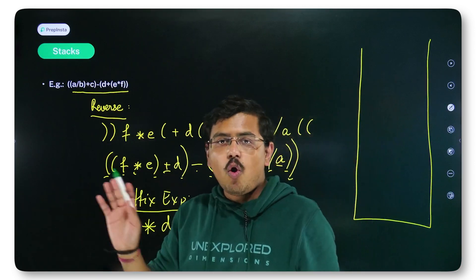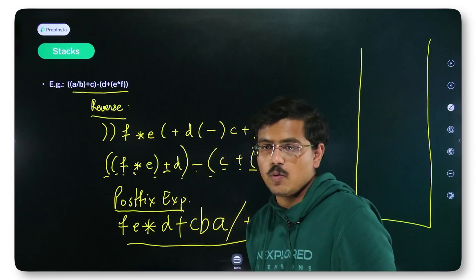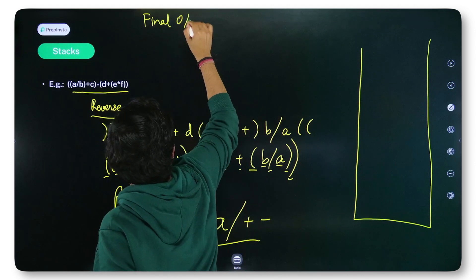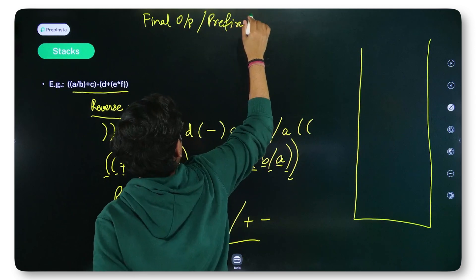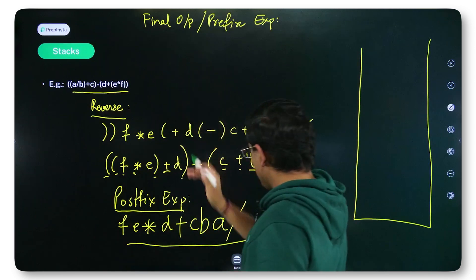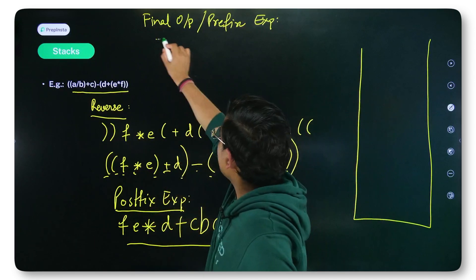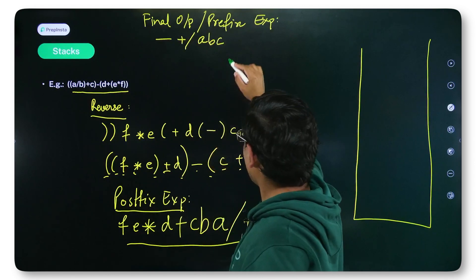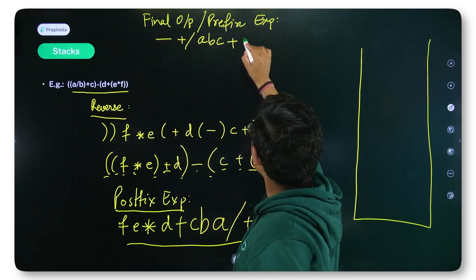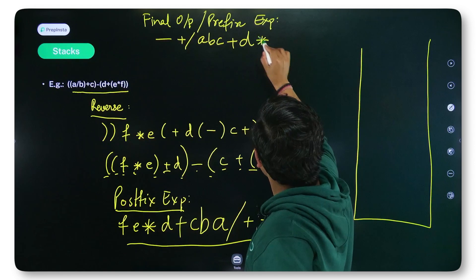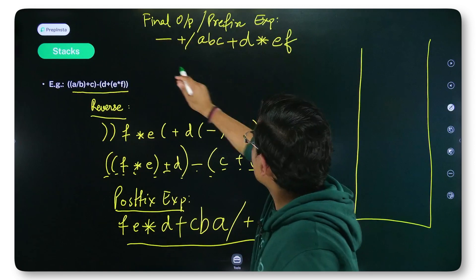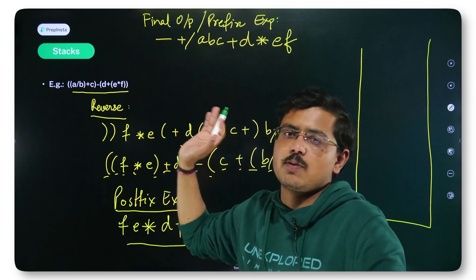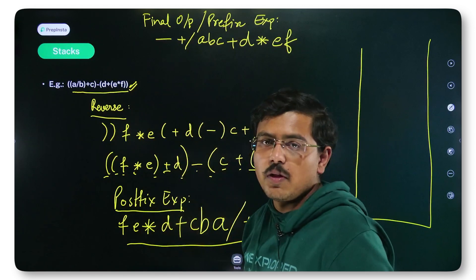Once the whole expression has been traversed, if there is anything lying in the stack, pop it out. Empty the stack and print everything popped. So here I print minus — it gets popped from the stack and the stack becomes empty. You now have your postfix expression. All you need to do is reverse this postfix expression. The final prefix expression is: minus, plus, division, A, B, C, plus, D, star (multiplication), E, F. This is the perfect prefix expression for the original infix expression.